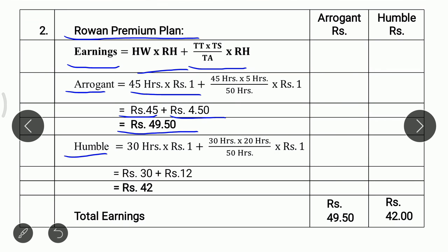In case of Humble, he takes 30 hours into Rs. 1 = Rs. 30. Plus time taken 30 hours × time saved 20 hours ÷ time allowed 50 hours × Rs. 1 = Rs. 12. So 30 plus 12, earnings of Humble is Rs. 42. According to Rowan Premium Plan, earnings of Arrogant is Rs. 49.50 and earnings of Humble is Rs. 42. Thank you.